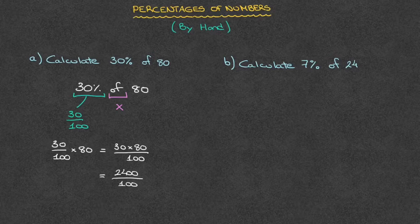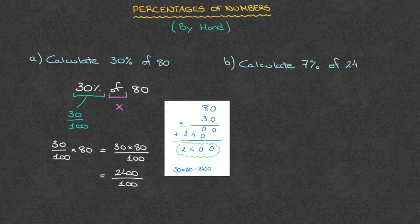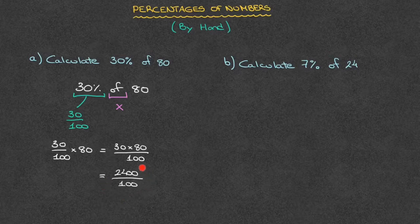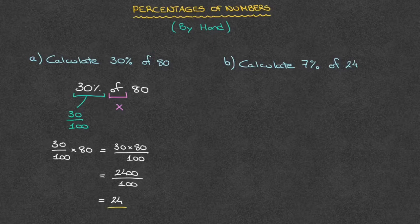If you're in any way uncomfortable calculating 30 times 80 by hand, by all means use long multiplication. Going back to our fraction, we have 2,400 over 100, and that means 2,400 divided by 100, which is equal to 24. So 30% of 80 is equal to 24.